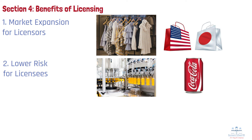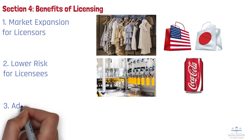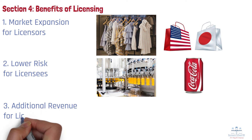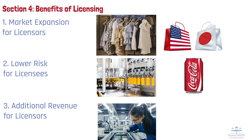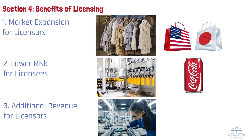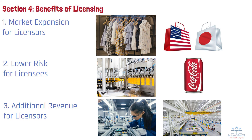Number 3: Additional revenue for licensors. Licensors generate additional income from fees or royalties without direct involvement in operations. For example, a technology company can license its patented innovation to other manufacturers, earning revenue through ongoing royalties.